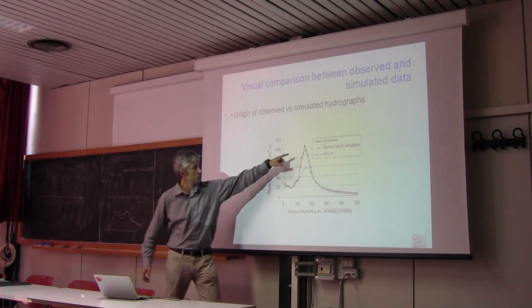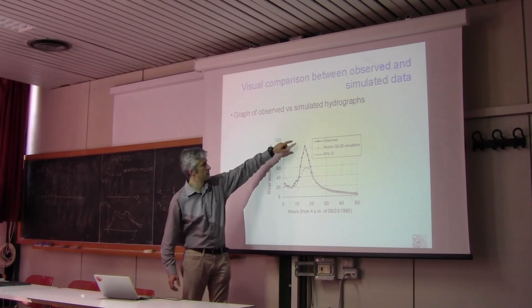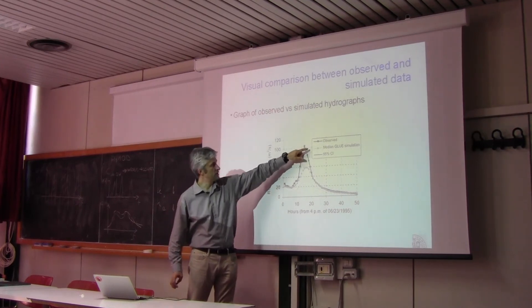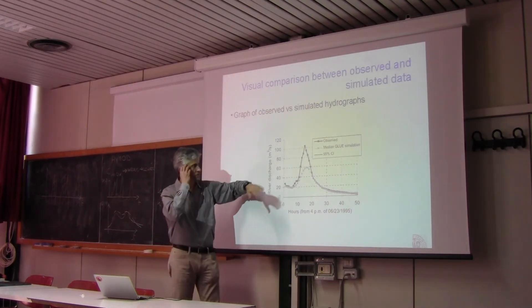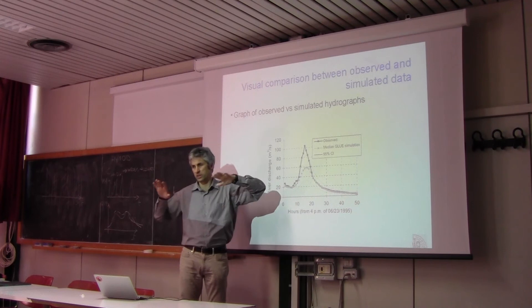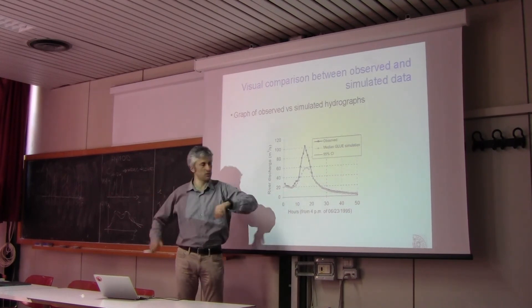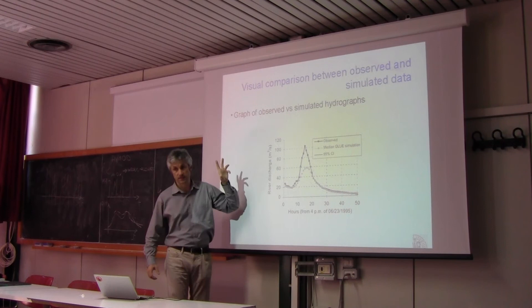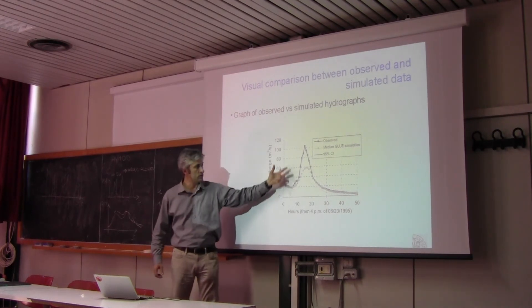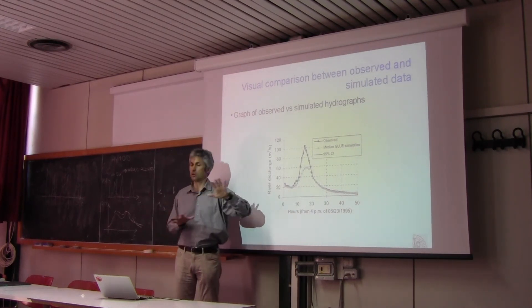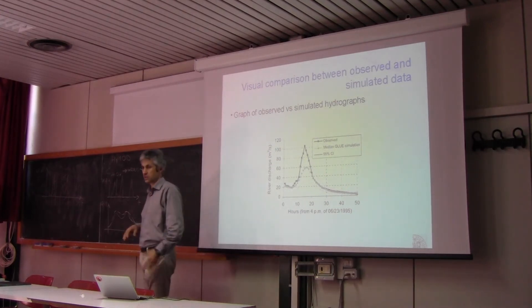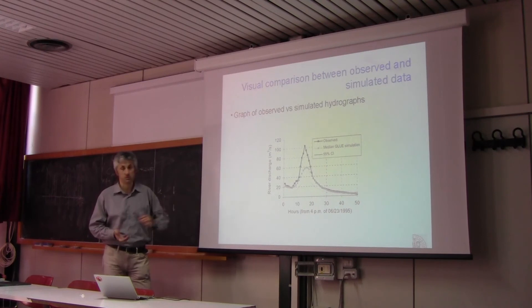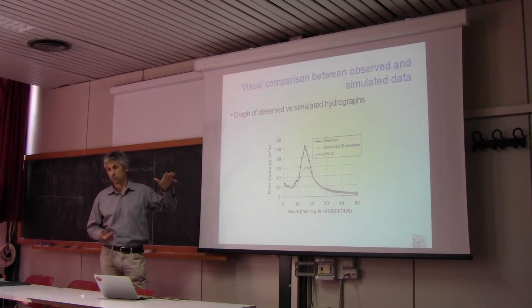Here you see that the observed data are the black dots while the simulated data, let's forget about the captions because you don't know what it is but basically it's model output. And it's given by the empty dots and also you have the certainty range which still we don't know how to compute it. Let's concentrate on the black dots and the empty dots. This is comparison between observed and simulated so people can see if for this particular flood the performance was good.